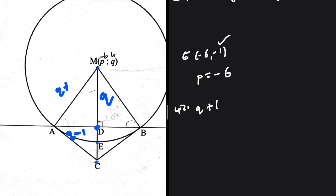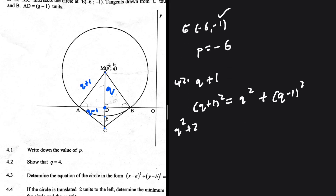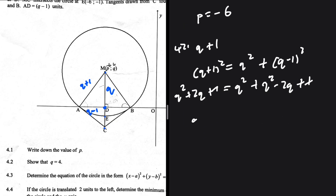MA is also q plus one. In that triangle we can use the theorem of Pythagoras because it's a right-angled triangle — the radius MD is parallel to the y-axis, that is the reason. So we say: (q + 1)² = q² + (q − 1)². Expanding: q² + 2q + 1 = q² + q² − 2q + 1. Dropping the ones: q² + 2q = 2q² − 2q.